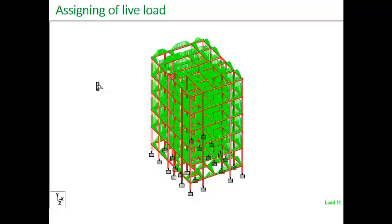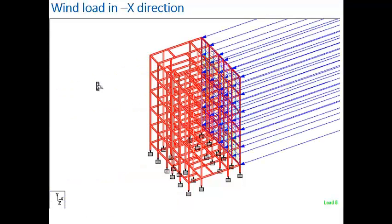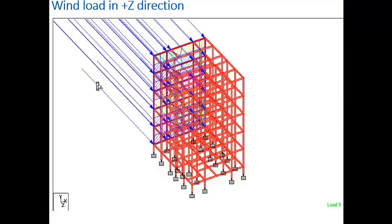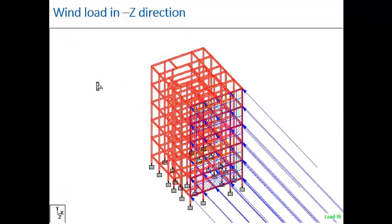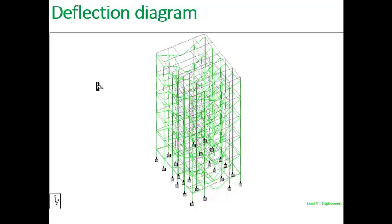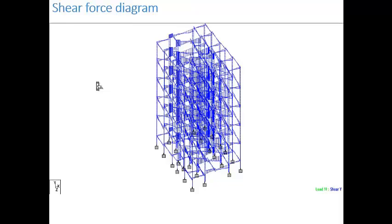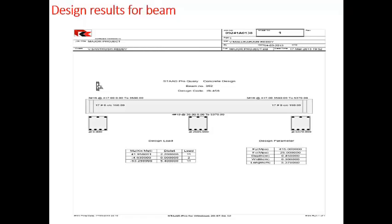Assigning of live load. This is the figure showing the wind load in the X direction. This is the wind load in the negative Z direction. This is the load in positive Z direction. This is the wind load in negative Z direction. This is the combination load case designed for the limit state design of 1.5 times dead load plus live load. This is the deflection diagram obtained from the analysis results of the entire structure. This is the bending moment diagram and the shear force diagram of the whole structure. This is the results for the beam, showing the reinforcement details of each individual beam.